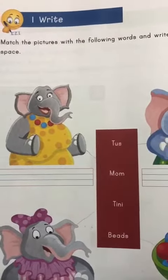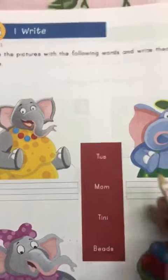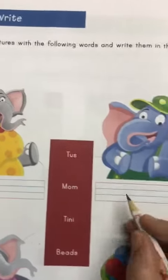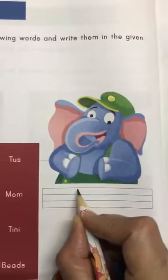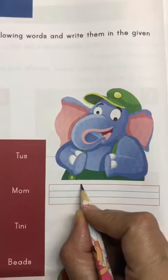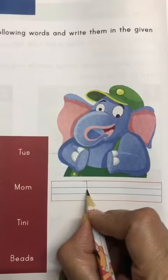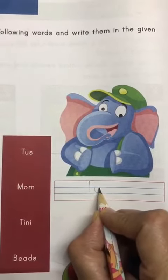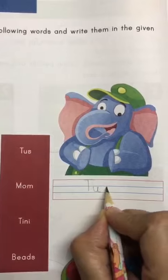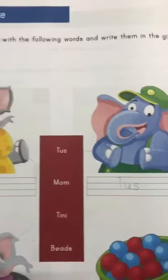That is write the name. So TAS. Let's write TAS here. We'll write T, E, S. TAS.